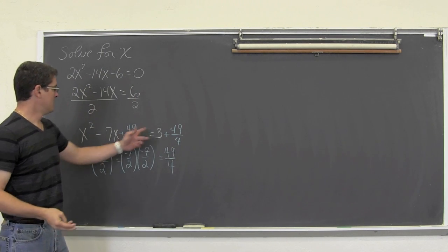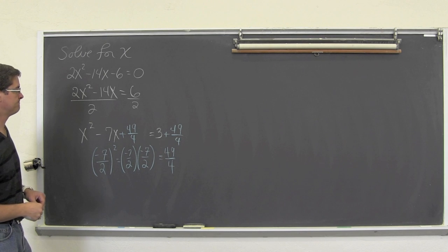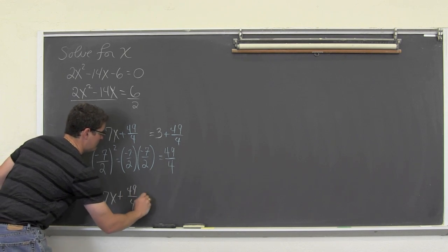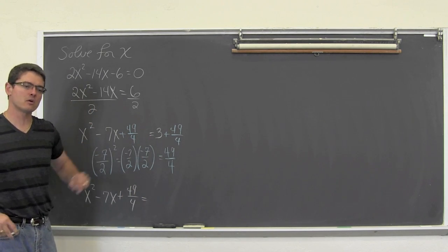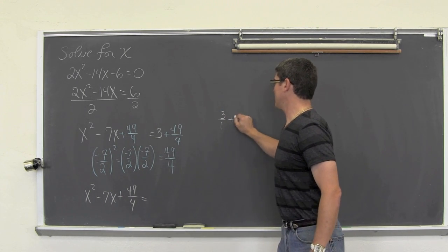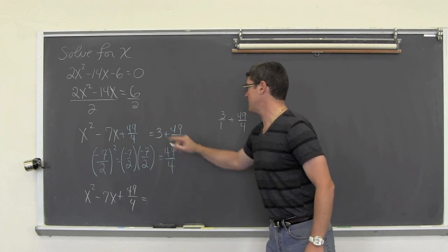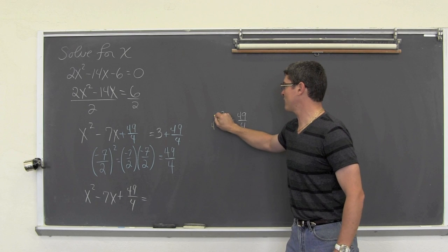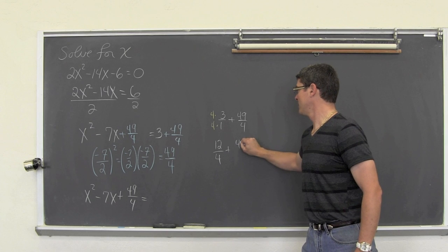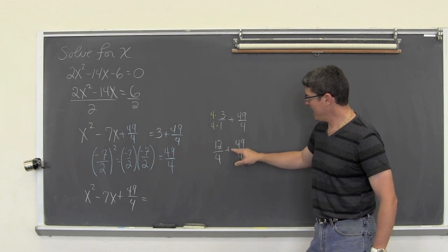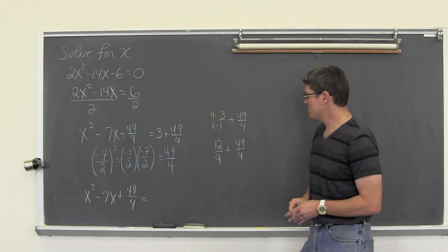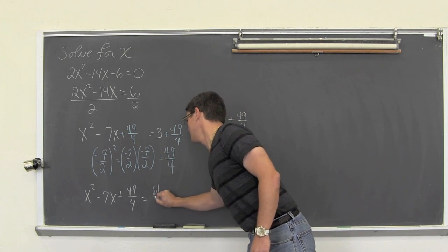To find the right-hand side, we compute 3/1 + 49/4 with a common denominator: 12/4 + 49/4 = 61/4. So we have x² − 7x + 49/4 = 61/4. This is a perfect square trinomial. Factoring it: square root of x² is x, keep the middle sign (minus), square root of 49/4 — square top and bottom separately — giving 7/2. So (x − 7/2)² = 61/4.